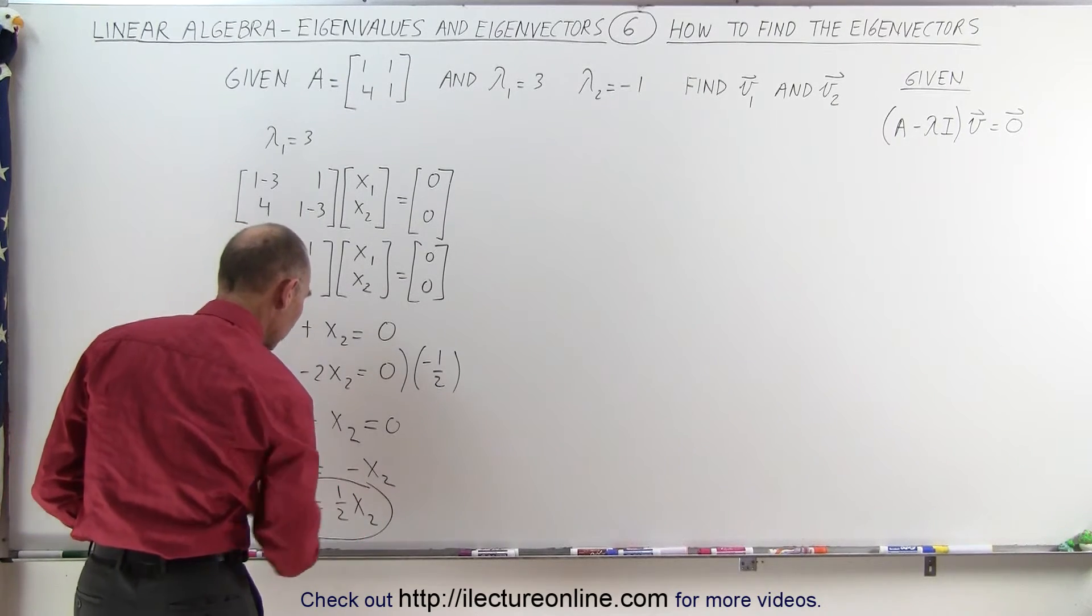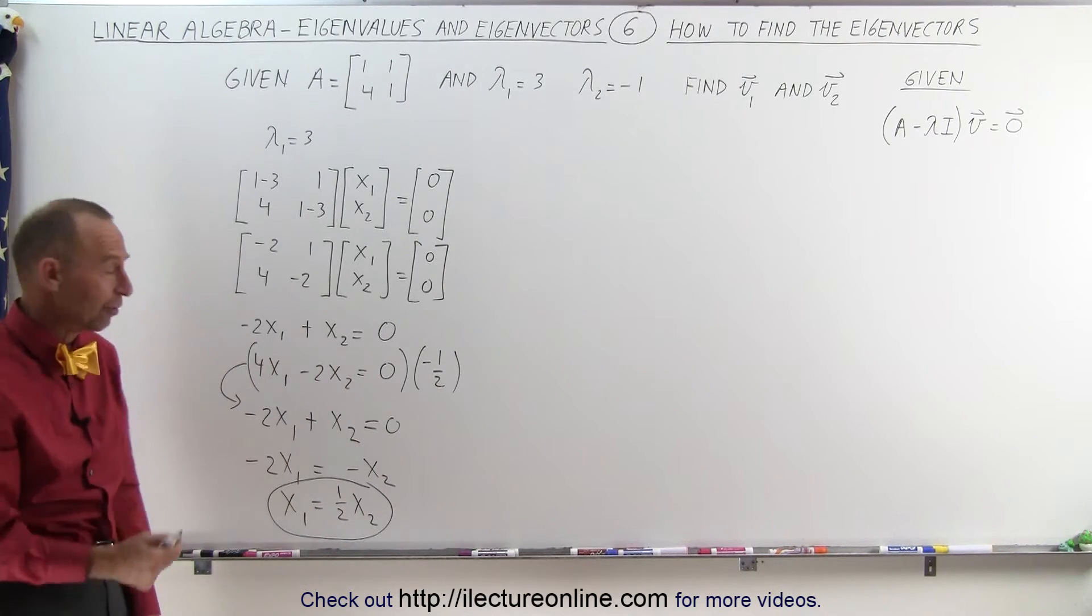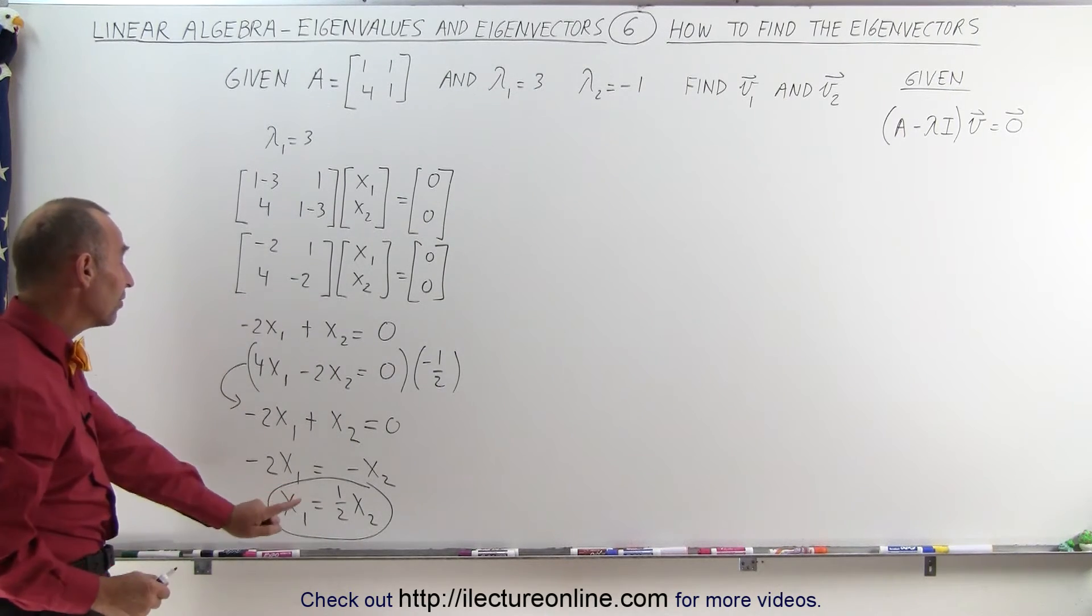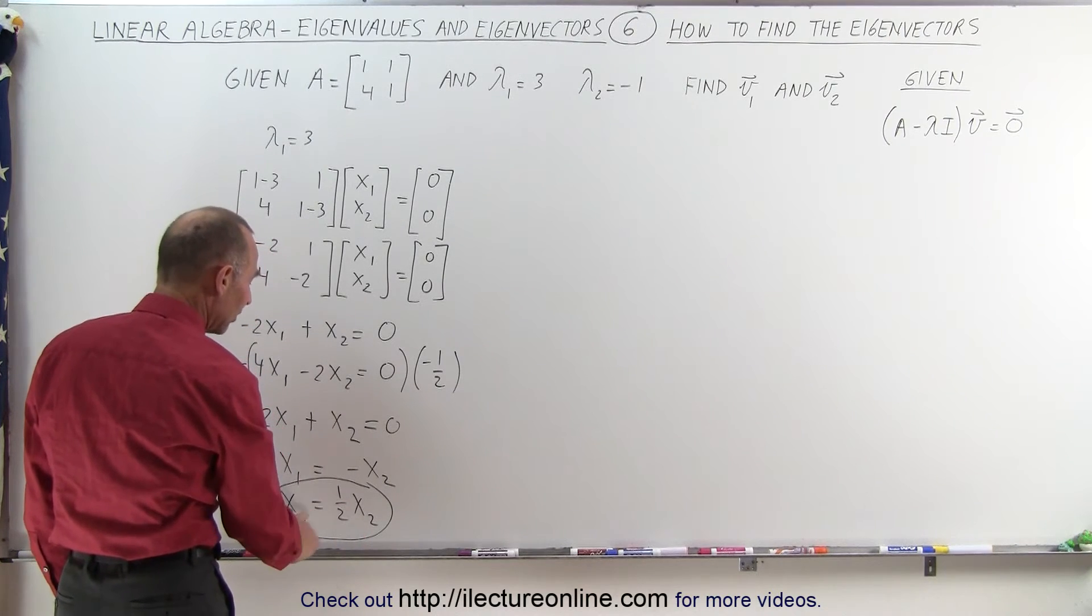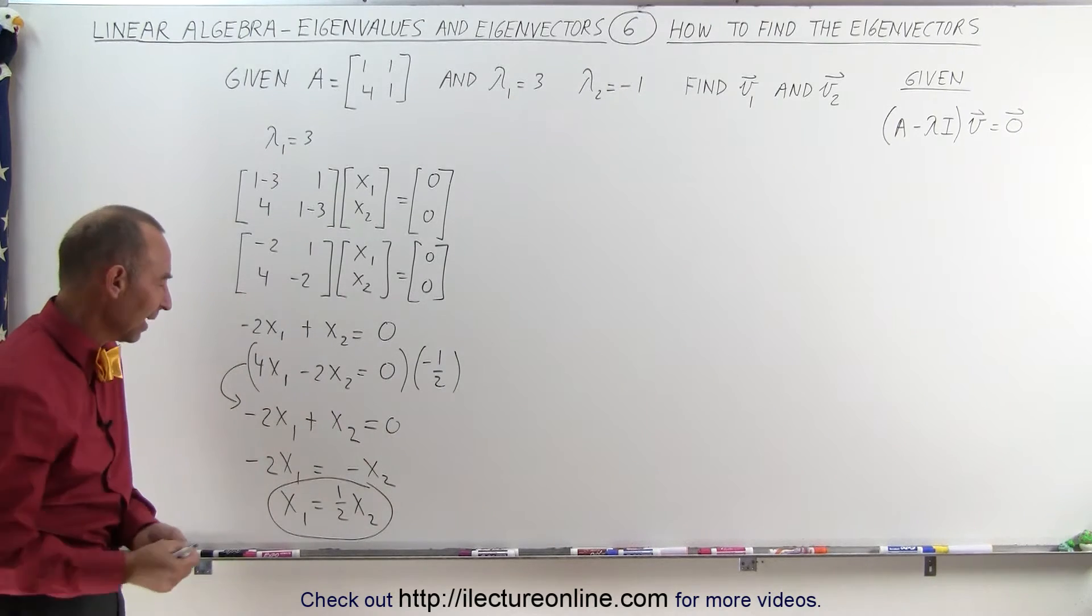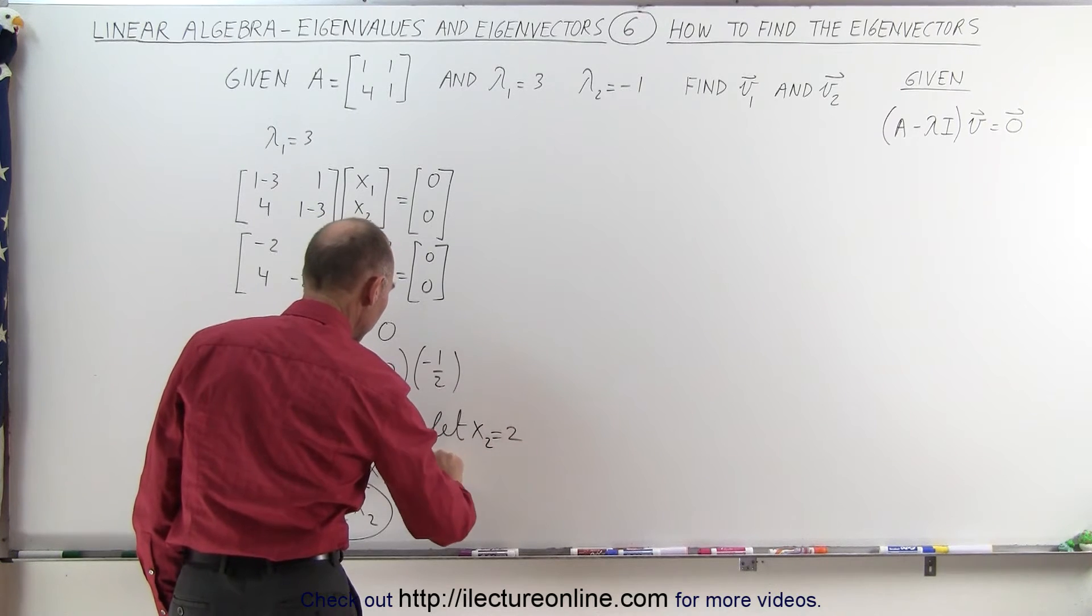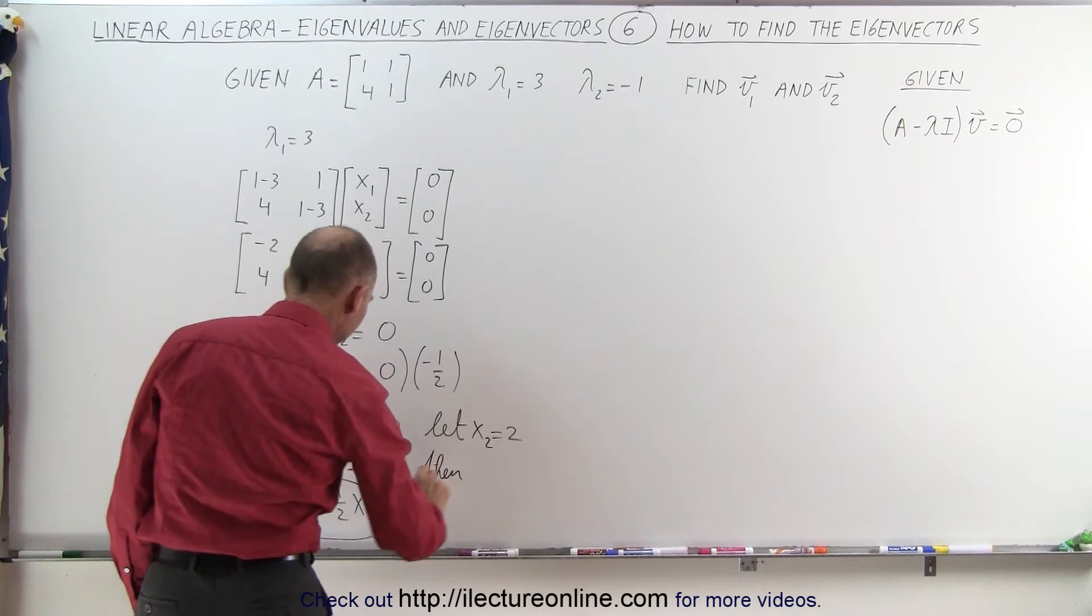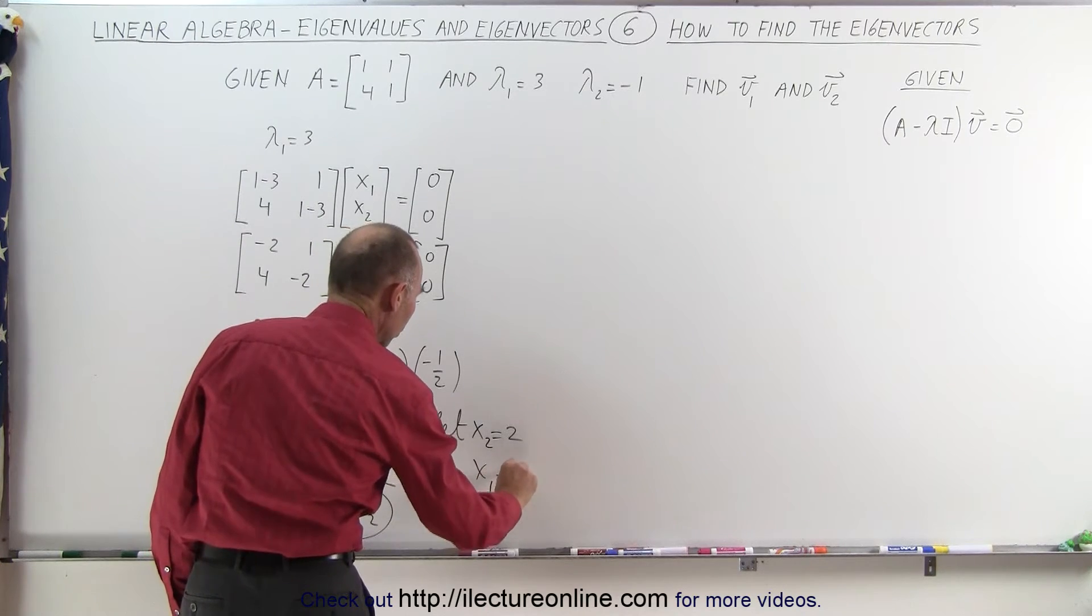This gives me the relationship between the two general variables x1 and x2. This means that if I allow x2 to be equal to 2, since x1 is half of that, x1 will only be 1. So I pick a value that seems to make sense, I'm going to let x2 equal 2, then x1 becomes equal to 1.